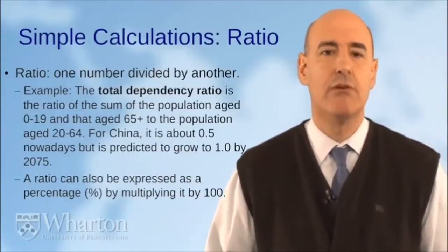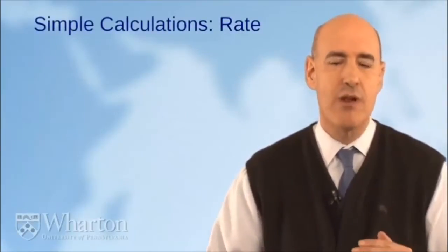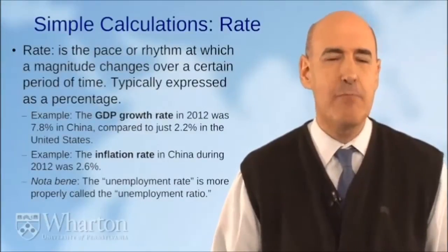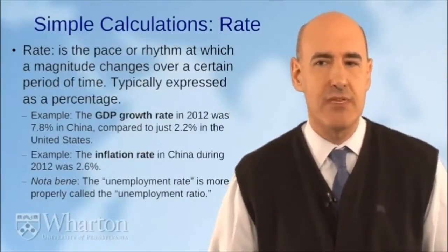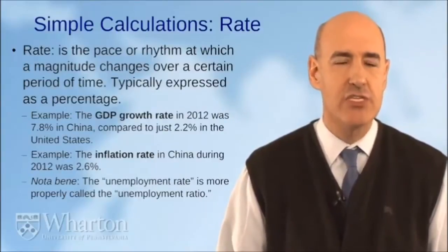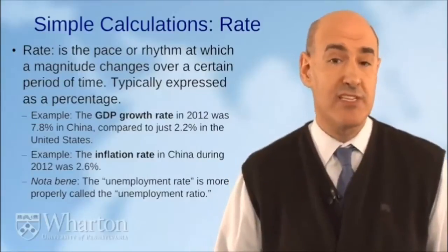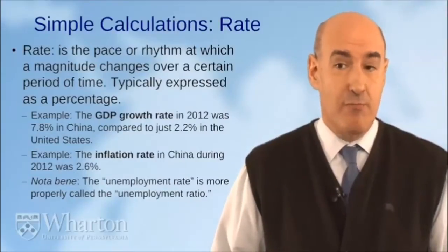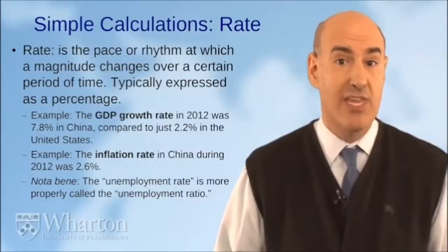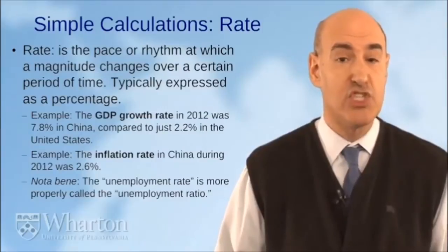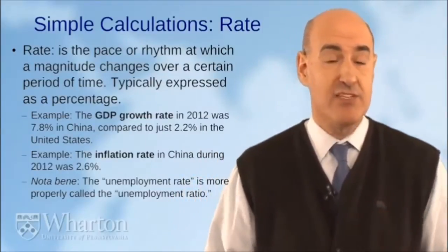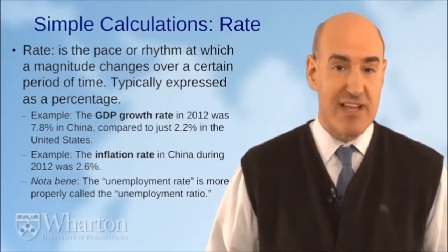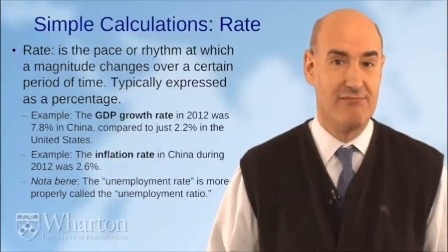A rate is different from a ratio because it incorporates a time dimension — it's the pace or rhythm at which a certain magnitude changes over a certain period of time, typically expressed as a percentage. For example, the growth rate of GDP during 2012 in China was 7.8%, whereas in the United States during the same year it was just 2.2% — meaning the Chinese economy grew much faster than the US economy during 2012.